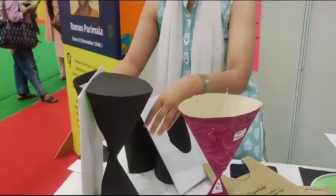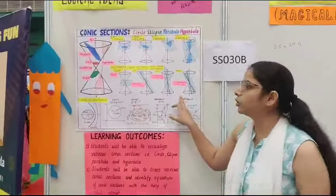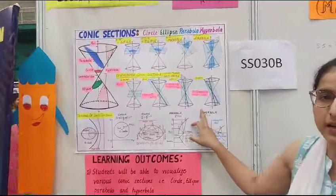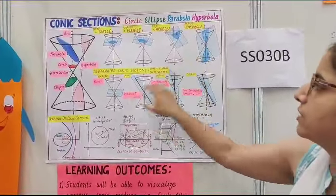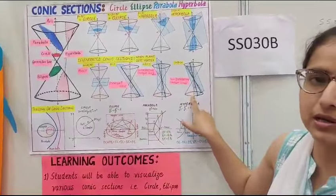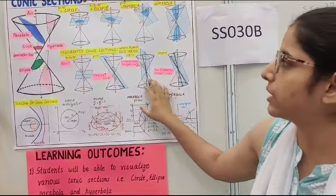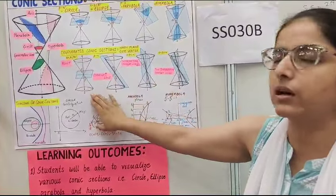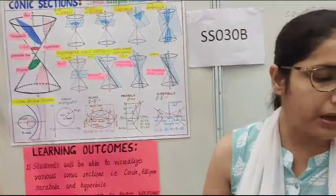We have explained these things. The chart has explained it. These are the conic sections, and these are the degenerate conic sections. We have seen degenerate conic sections when the plane cuts the vertex. And now we have tracing.